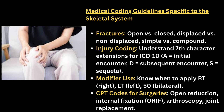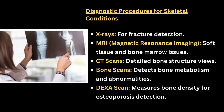Medical coding guidelines: for fractures, we code open versus closed, displaced versus not displaced, and simple versus compound. For injury coding, we assign a seventh character for the extension, and modifiers used include RT, LT, or 50 for bilateral procedures. CPT codes include open reduction, internal fixation, arthroscopy, and joint replacement. Diagnostic procedures include X-ray for fracture detection, MRI for soft tissue and bone marrow issues, CT scan for detailed bone structure view, bone scan for detecting bone metabolism and abnormalities, and DEXA scan for measuring bone density and osteoporosis detection.